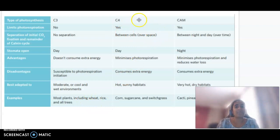C4 plants do limit photorespiration. The separation of initial carbon dioxide fixation is between cells. Stomata open during the day. Advantages: minimized photorespiration. Disadvantages: more energy consumption. Best adapted to hot, sunny habitats. Examples include corn, sugarcane, and switchgrass.